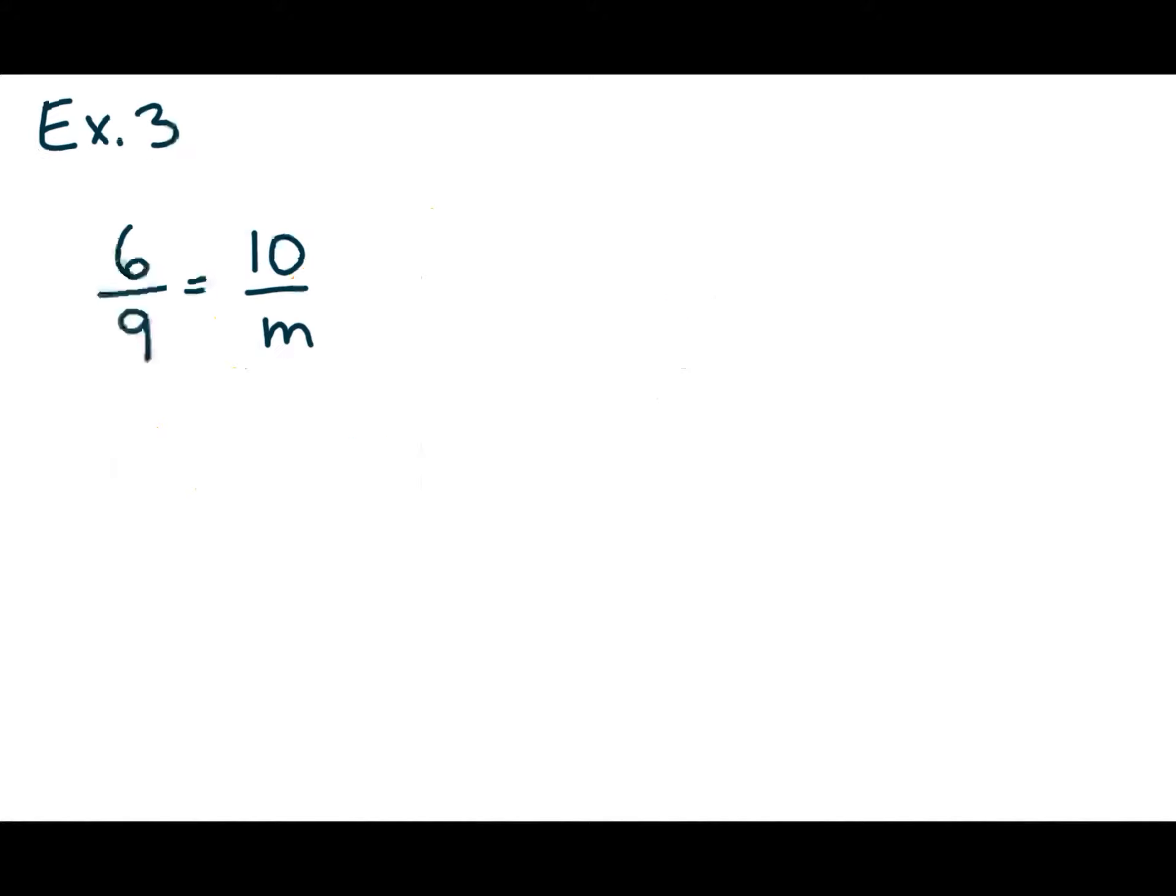In this example, we're going to be using this principle to find an unknown m. So I'm just going to cross multiply. 10 times 9 is equal to 6 times m. I'm going to leave it like this because I can more easily factor before I have to divide.